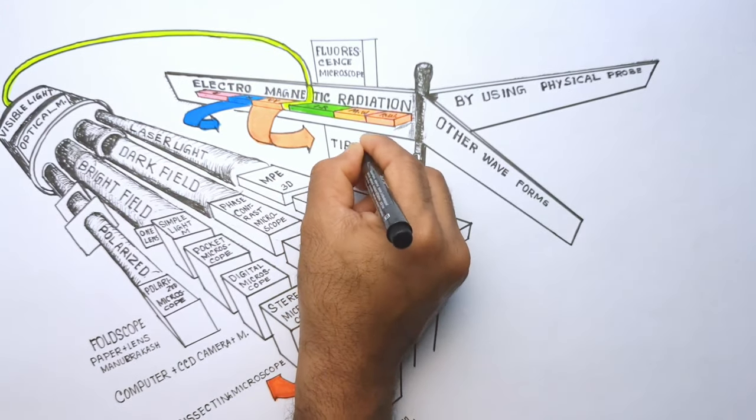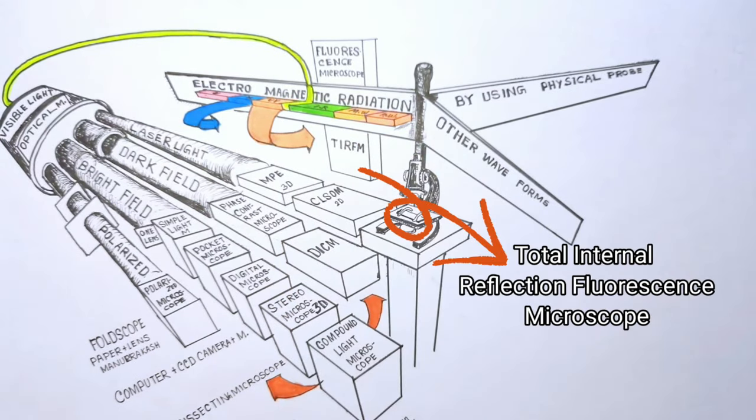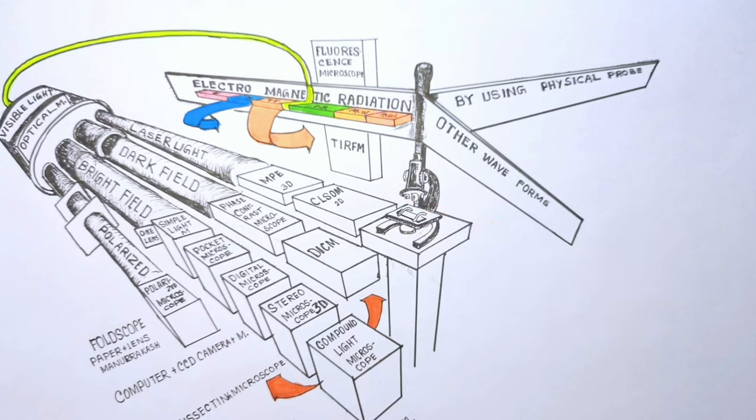A variant of fluorescent microscope is the Total Internal Reflection Fluorescence Microscope or TIRFM. It is a type of microscope with which a thin region of a specimen usually less than 200 nanometers can be observed.